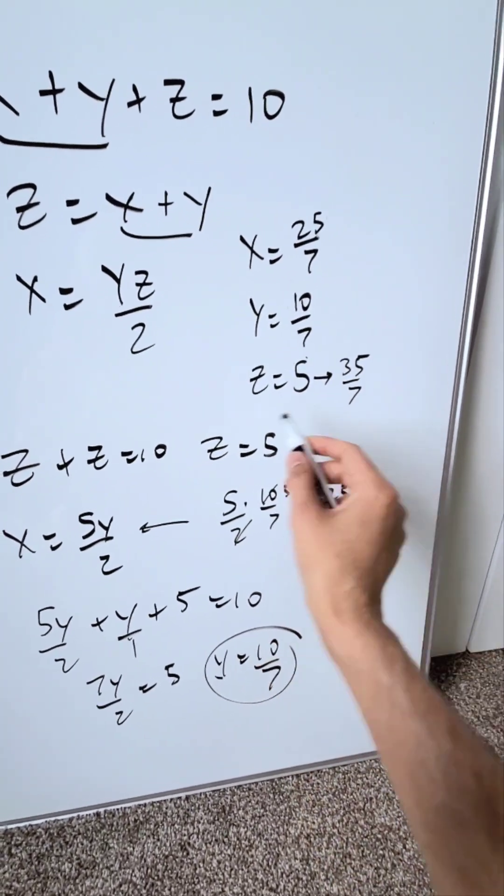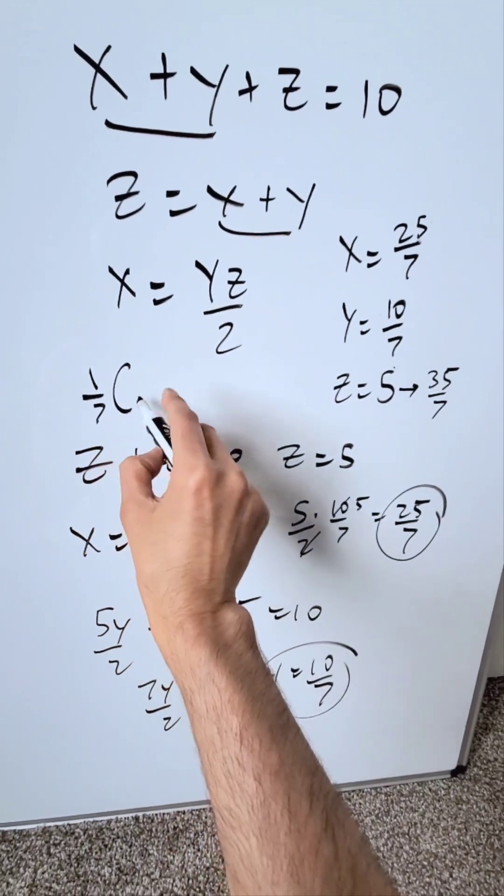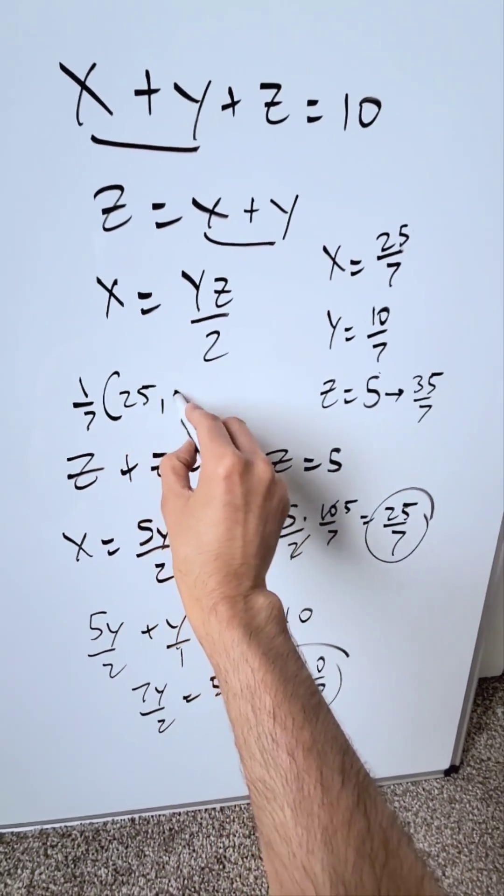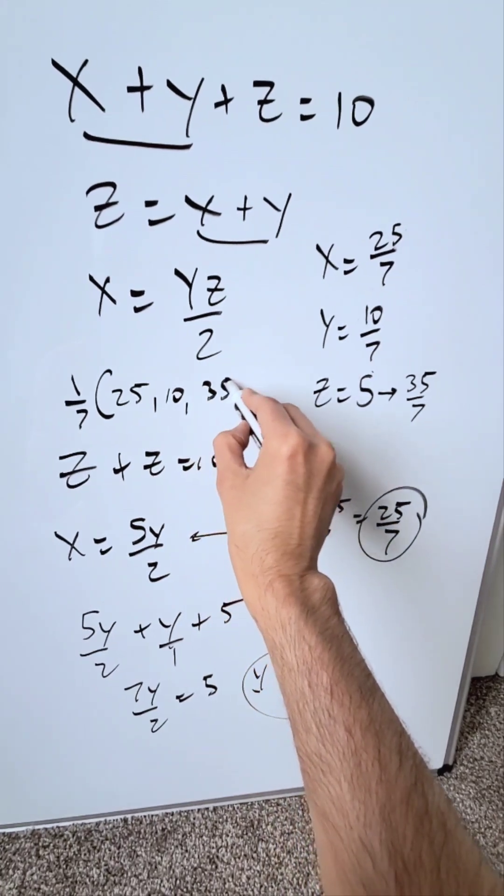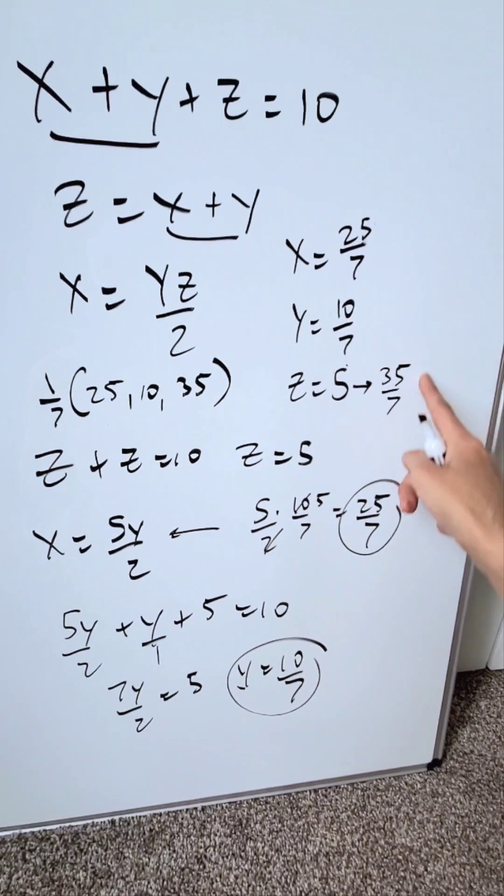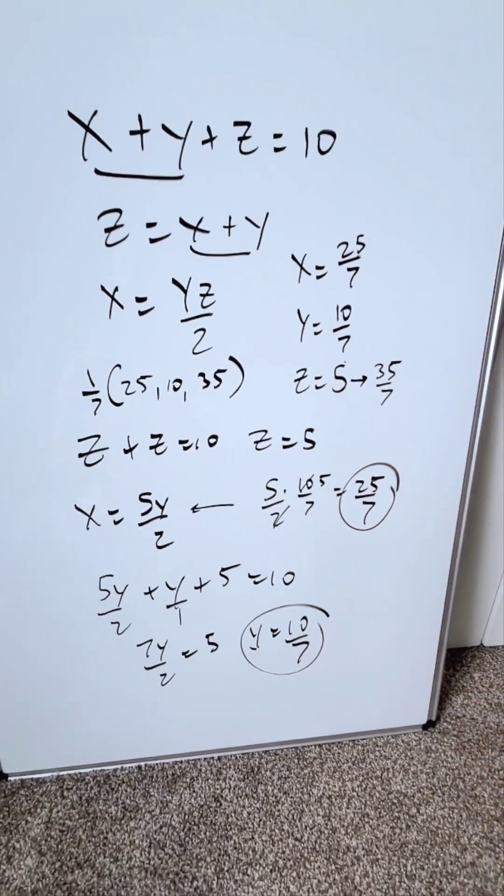If you want to present your answer in a different way, you can. You can say 1 over 7 parentheses, then you put in the value of x, y, and z. It'll be 25, 10, 35. This here is another way: 1 over 7 times the value of x, y, and z, which is equivalent to what you see over here. Everything is completed.